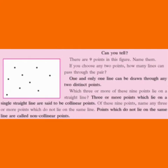Which three or more of these nine points lie on a straight line? Three or more points which lie on a single straight line are said to be collinear points.